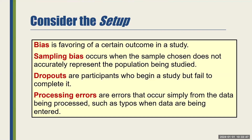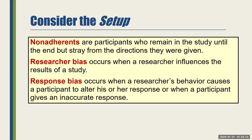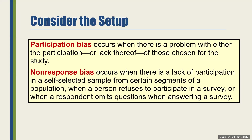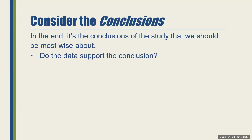Some additional vocabulary: bias is the favoring of a certain outcome in a study — we definitely do not want it, and we reduce it through randomization. Other issues include dropouts — participants who decide they don't want to continue — and non-adherence. There's also bias from the researcher and from responses. Participation bias and non-response bias are problems that can come up. Pause the video to read through this vocabulary.